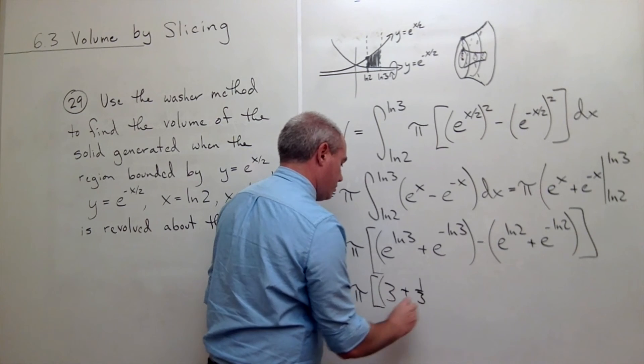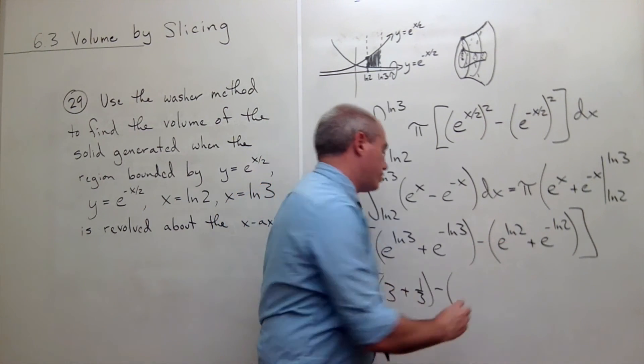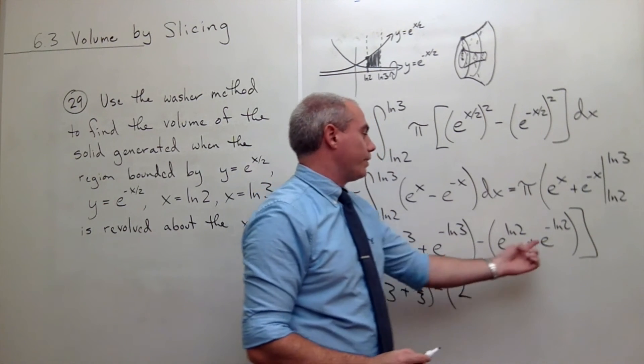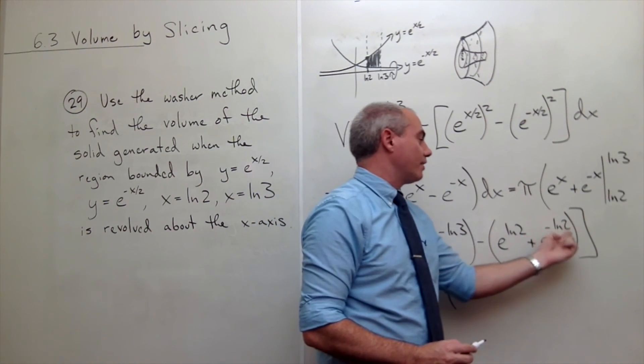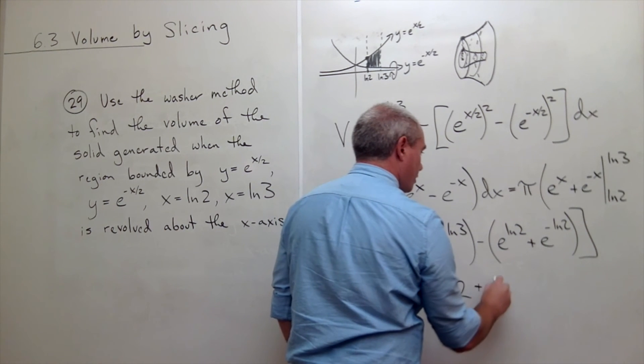then we get e to the ln of 2, which is 2. And we get e to the negative ln of 2, which by the same trick is plus 1 half.